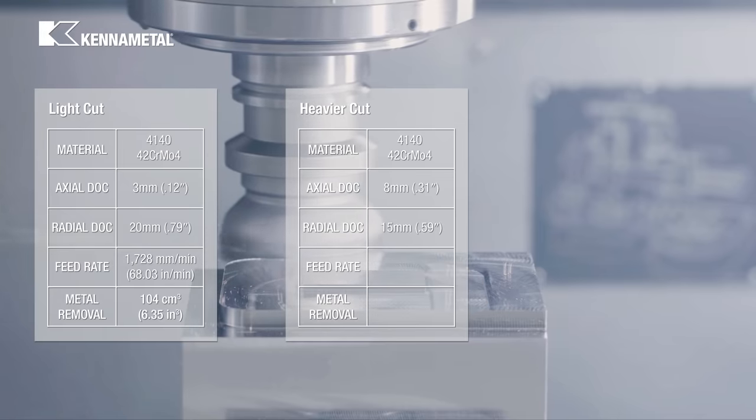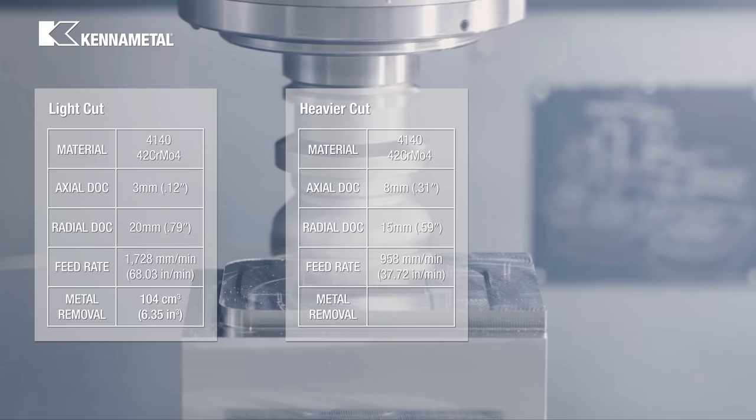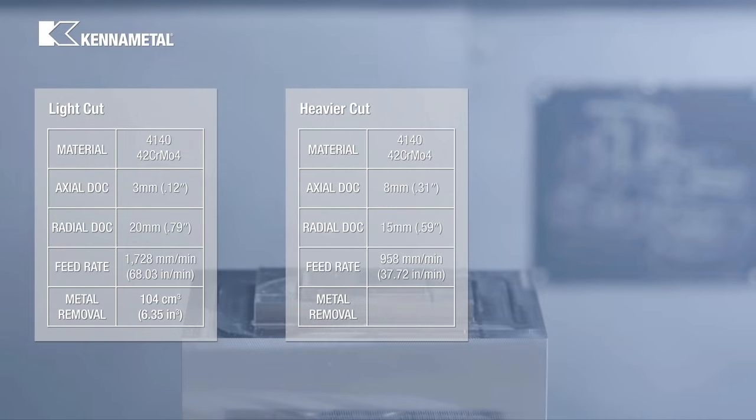Let's compare the metal removal rate with what we saw in the first cut. With an 8 millimeter depth of cut, 15 millimeter radial depth of cut, and 958 millimeters per minute feed rate, we achieved a metal removal of 115 cubic centimeters.